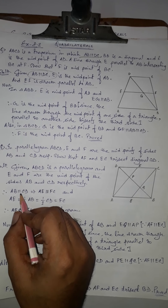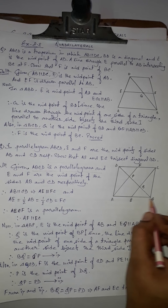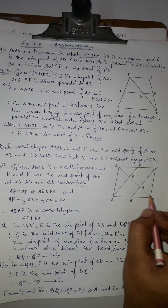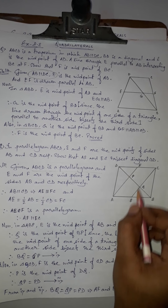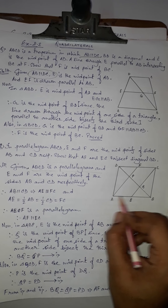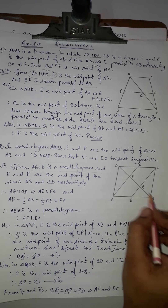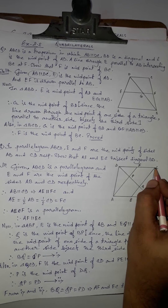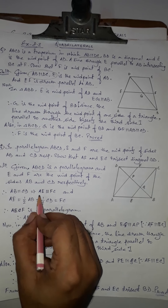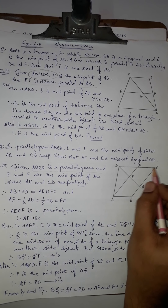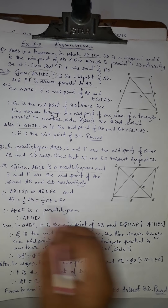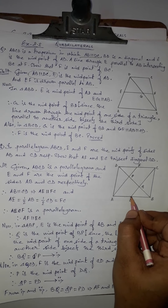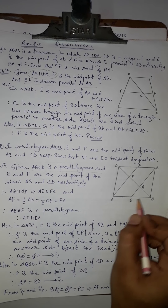Since ABCD is a parallelogram, opposite sides are parallel, so AB is parallel to CD. This implies AE is parallel to FC, as they are parts of the same parallel sides. Also, since E is the midpoint of AB, AE equals half of AB.